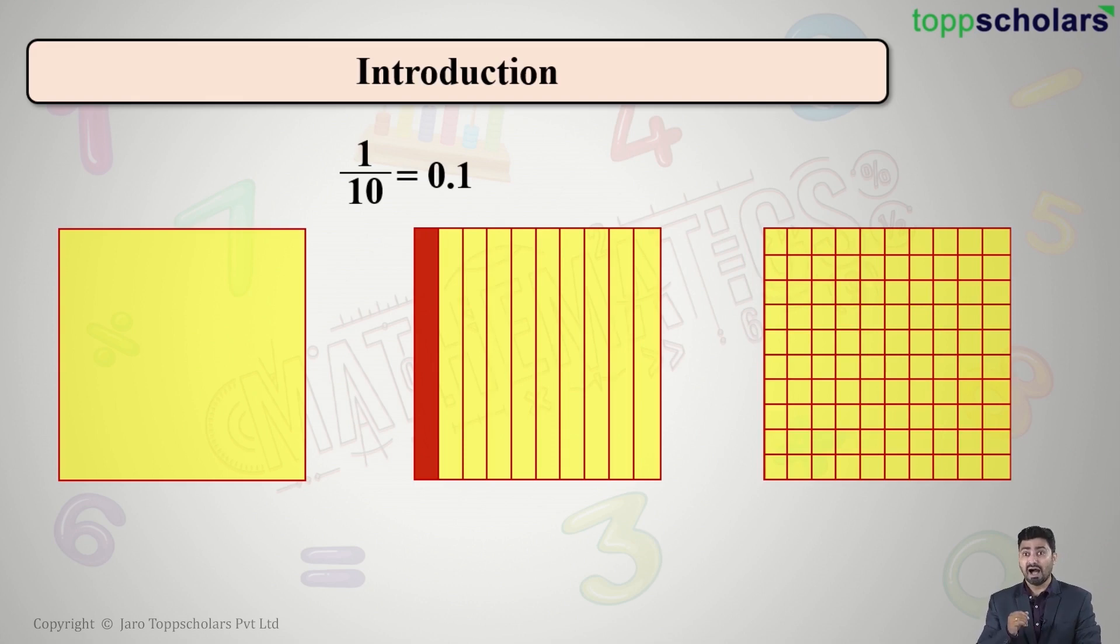So now I have in all 100 parts in the square. Out of these 100 parts, I start selecting 1, 2, 3, 4, and so on. I select 10 parts out of 100 parts. So this time I have 10 out of 100, that is 10 upon 100.